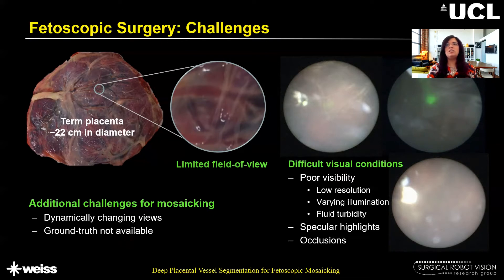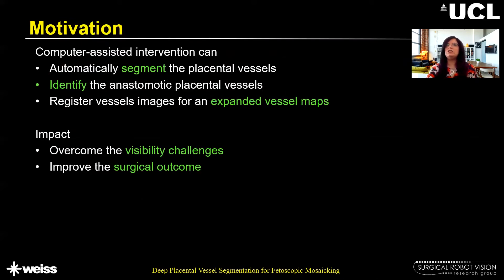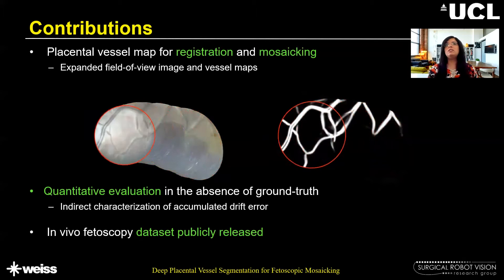Moreover, ground truth is not available in the in vivo setting for registration and validation. Because of these challenges, conventional mosaic methods don't tend to work on fetoscopic videos. Computer-assisted intervention can guide the surgeon during the TTTS procedure by helping in better localization of vascular anastomosis sites. It can also help in automatically segmenting the placental vessels, and by registering these placental vessels we can create expanded field of view maps of the environment, which can facilitate improving the surgical outcome.